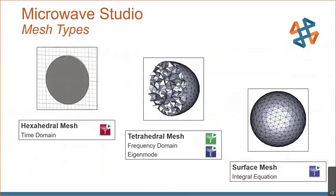A quick note on meshing: there is a non-uniform hexahedral mesh, a tetrahedral mesh, and then surface meshing.